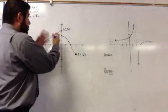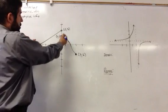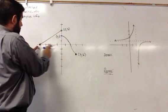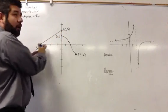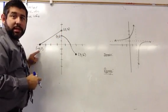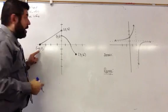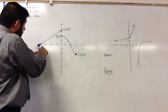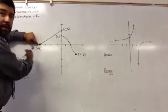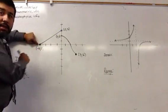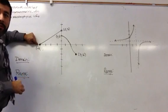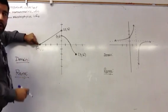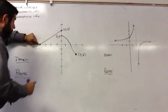You could take this graph and look at the smallest x value that's included in the graph. Notice that negative 4 — there are no values on this side of the graph of negative 4, so negative 4 is going to be our smallest x value.